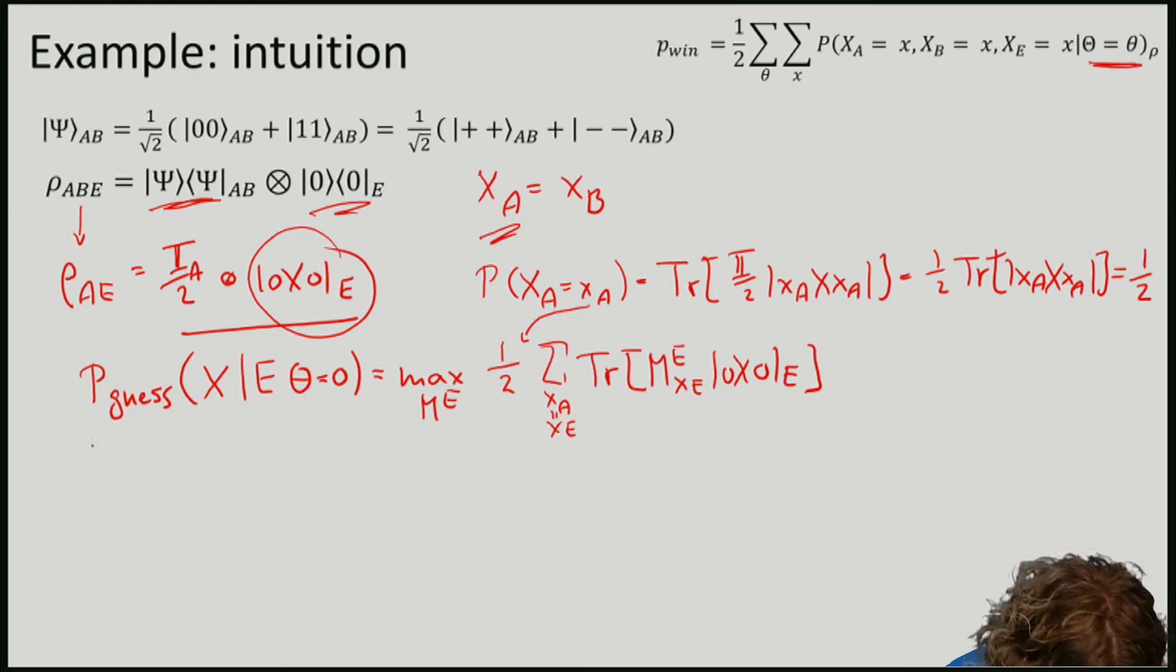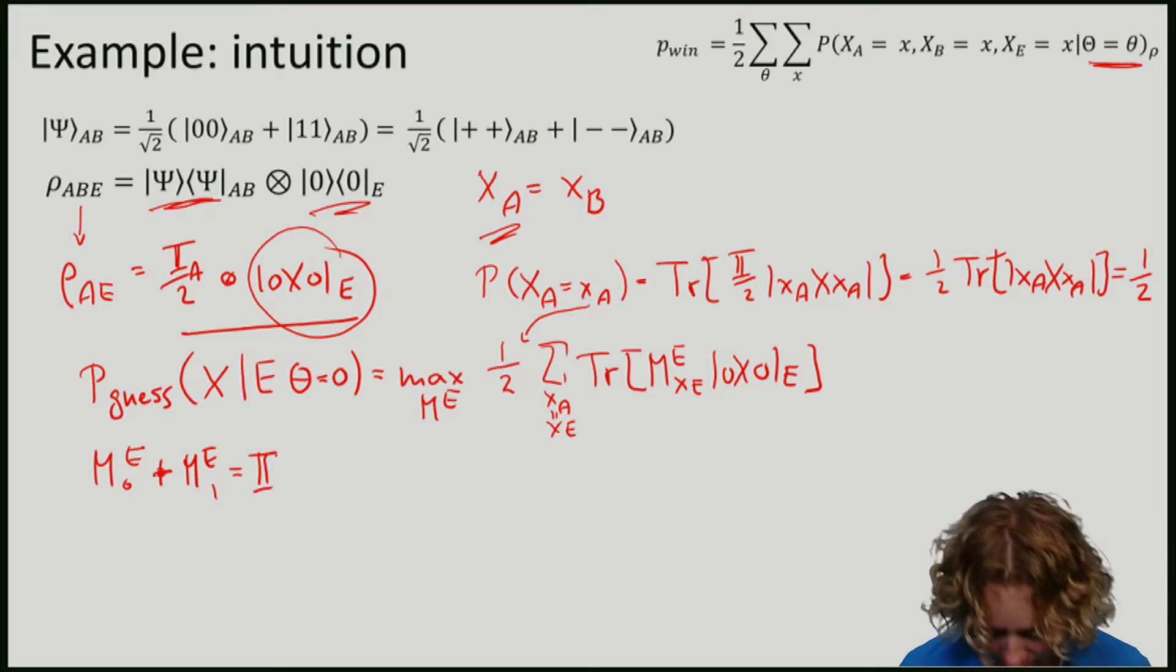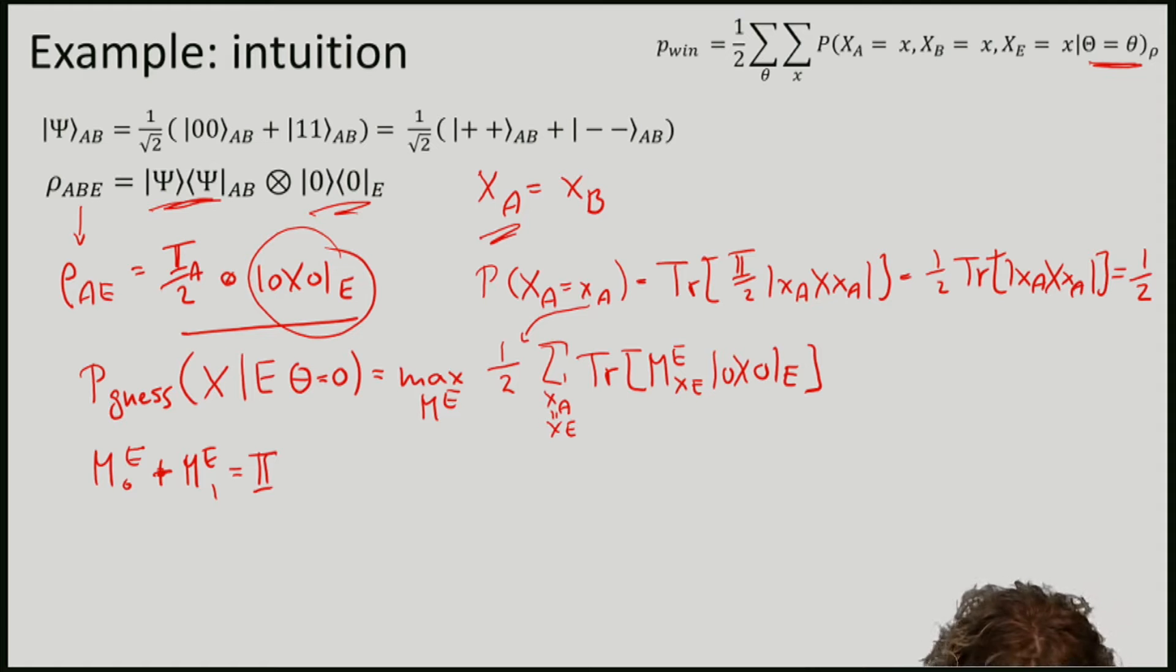Noting now that the sum of measurement operators is equal to the identity, and noting that the trace is linear,